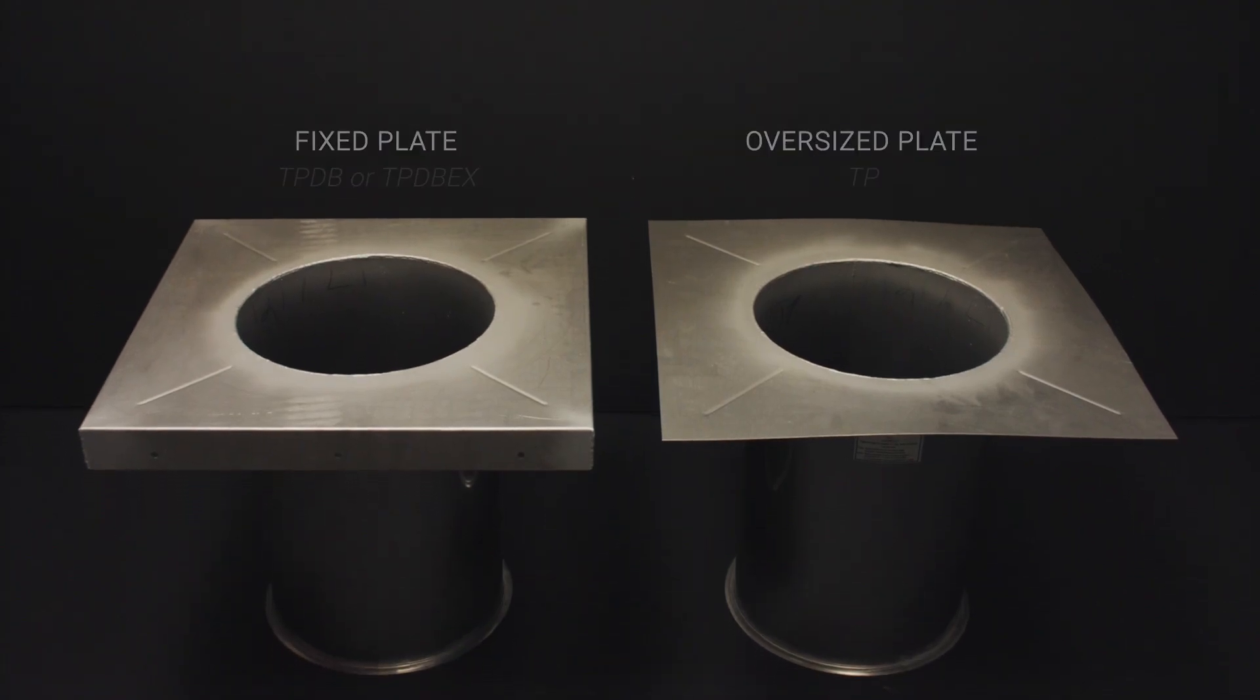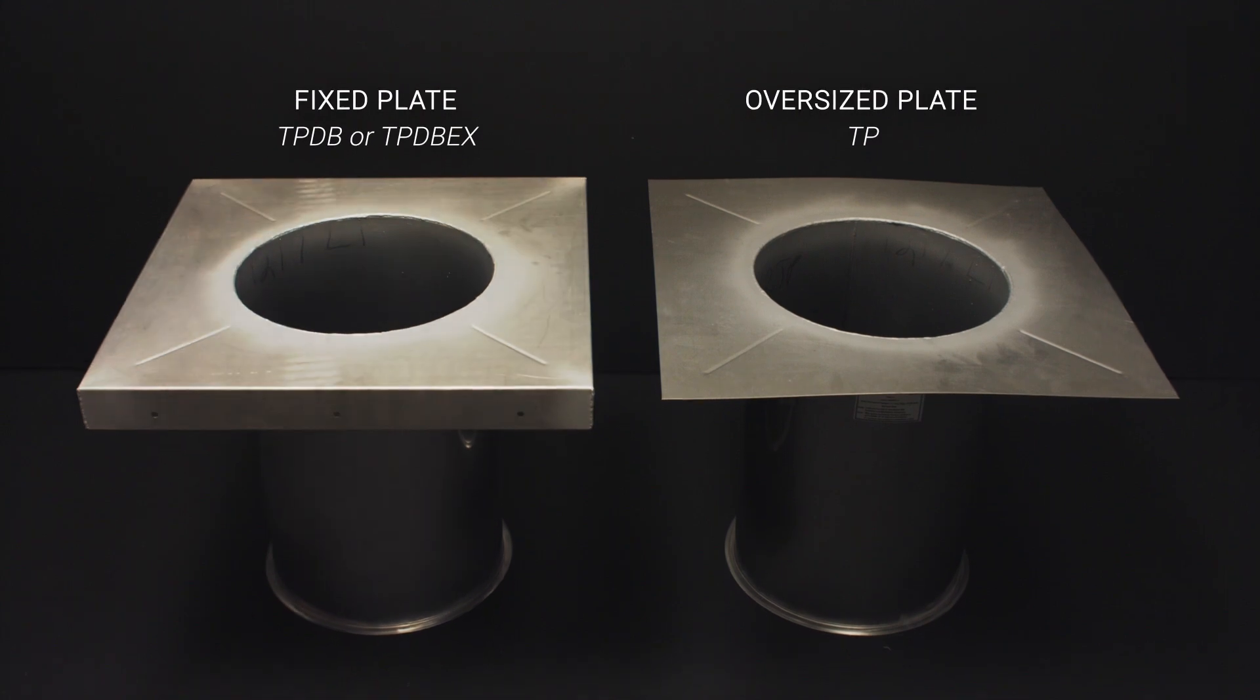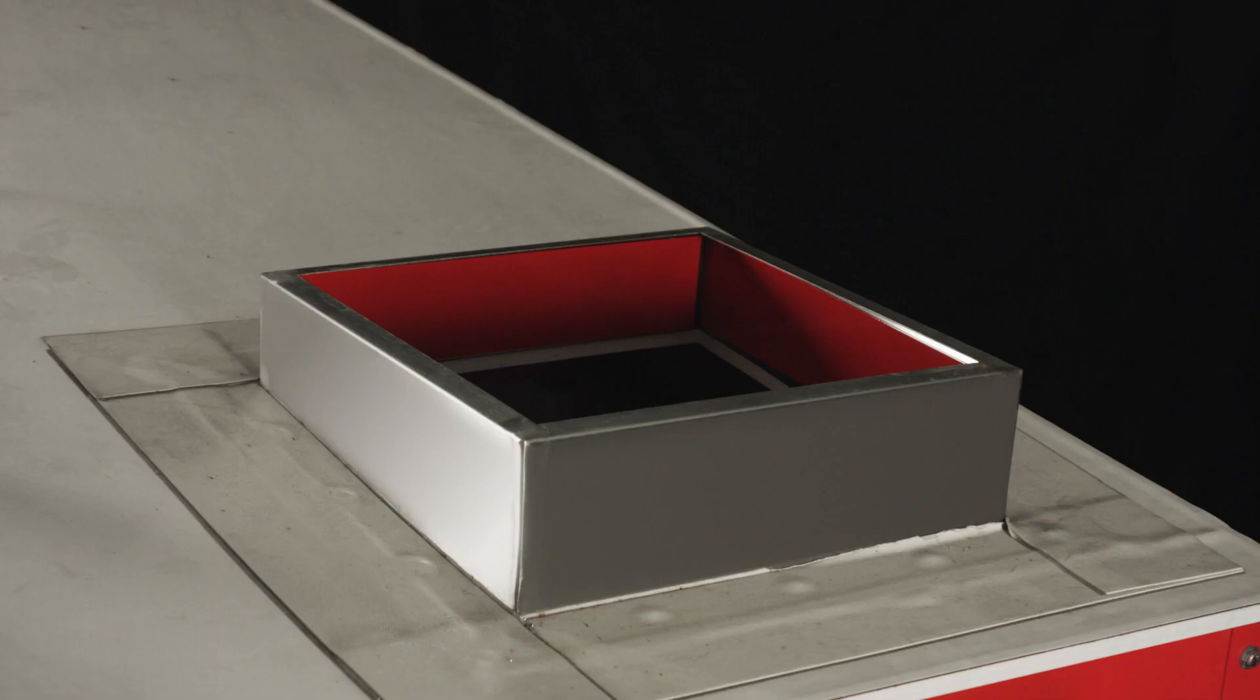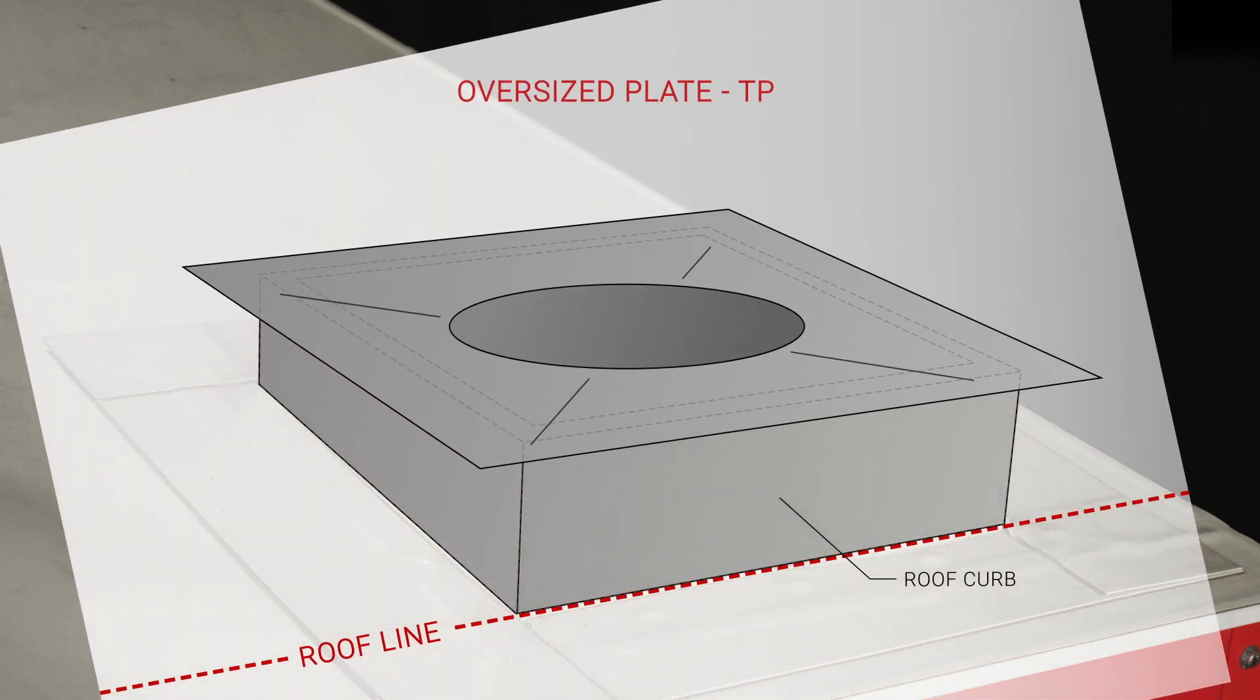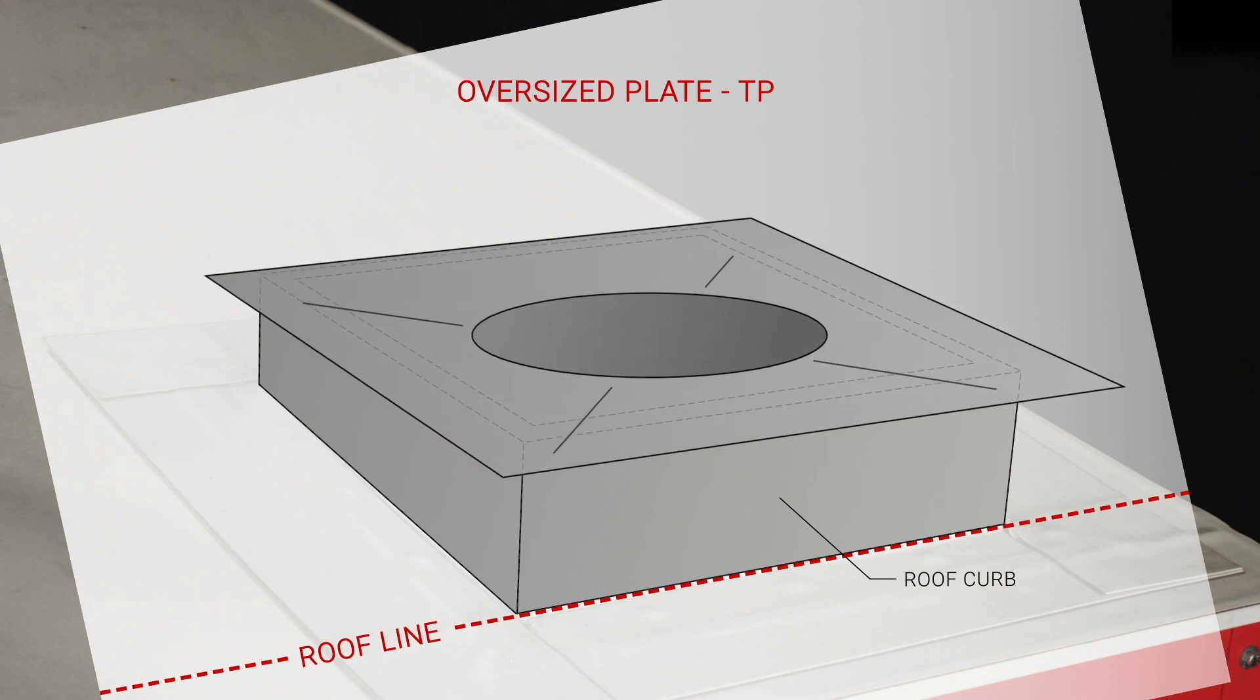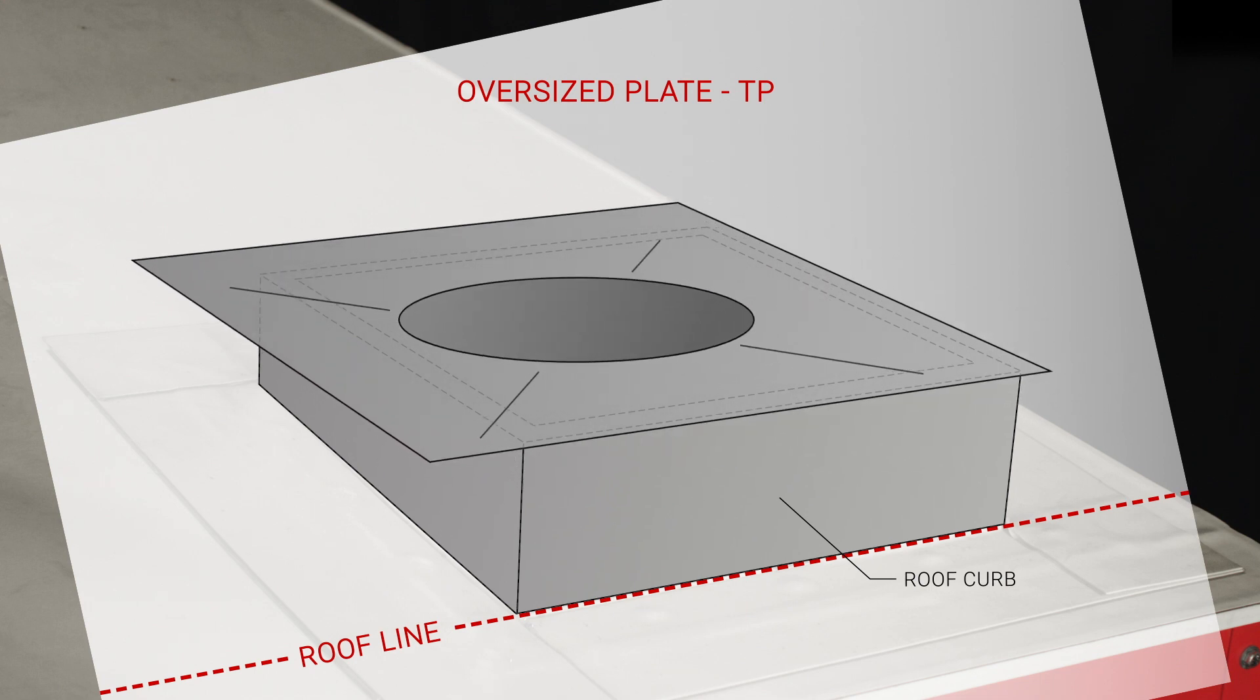There are two categories of transition plates, either fixed or oversized. To install an oversized TP plate, first place it on the curb. The plate can be positioned off-center with the curb, provided that the minimum clearance to combustibles is maintained.